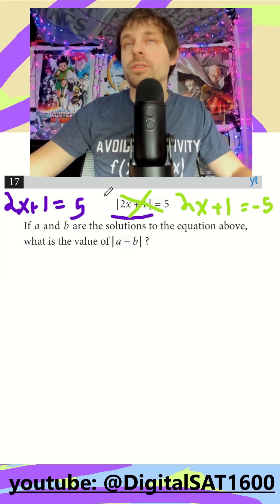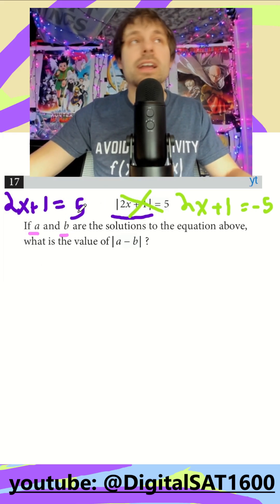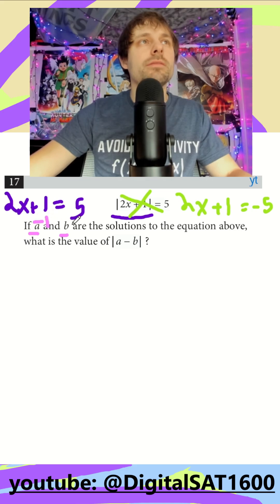And at this point we just solve for our two solutions, right? They want A and B, and I have two equations I can solve for x. So if I subtract 1, subtract 1, it should be 2x is equal to 4, or x is equal to 2.